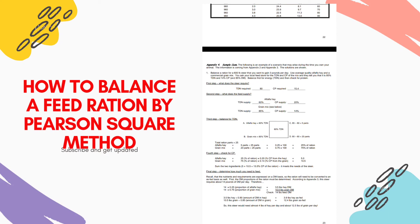To calculate the as-fed weight, we account for the dry matter content of each ingredient. Alfalfa hay has 90% dry matter, so 3.5 ÷ 0.90 = 3.9 pounds of hay as fed. Grain mixture has 85% dry matter, so 10.5 ÷ 0.85 = 12.4 pounds of grain as fed. Therefore, this steer would need approximately 3.9 pounds of hay and 12.4 pounds of grain per day.